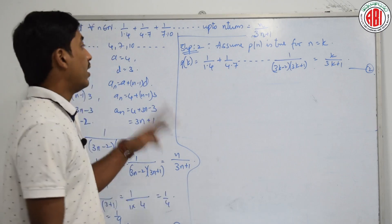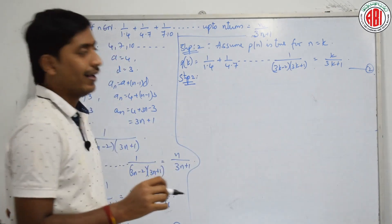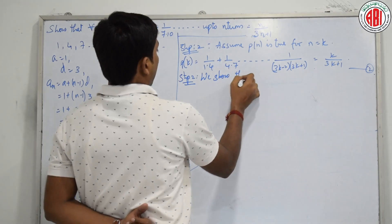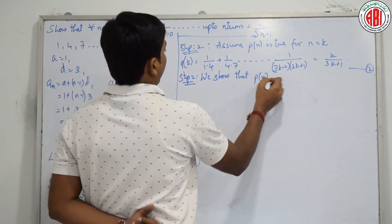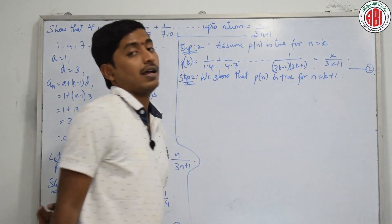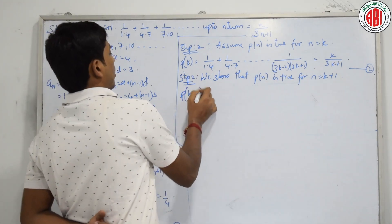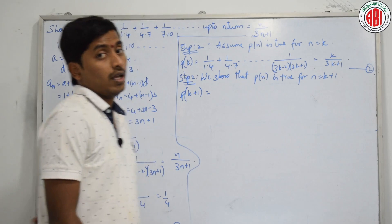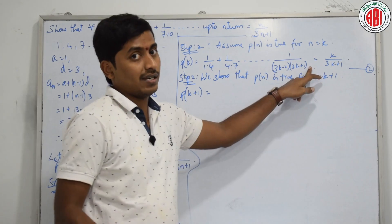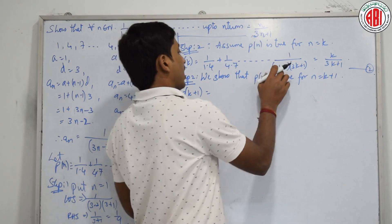Step 3, which is very important and can be confusing: we show that P(n) is true for n equal to k plus 1. Just substitute the value for P(k+1). I know that this whole term is P(k) and the next term is obtained by substituting k plus 1 in the nth term. Just substitute k plus 1.